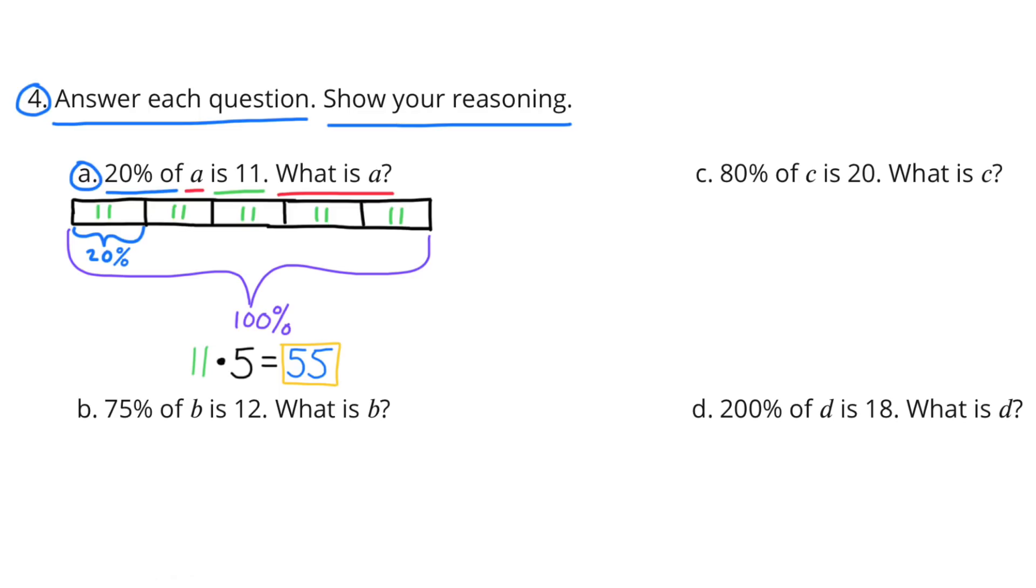Number 4: Answer each question. Show your reasoning. Part A: 20% of A is 11. What is A? I know 20% goes into 100% five times: 20, 40, 60, 80, 100. So 100% would include five sections, and each section would be worth 20%. They say that 20% of A is 11, so I've put the value of 11 inside each of the five sections. And 5 times 11, or 11 times 5, is 55. So the value for A is 55.